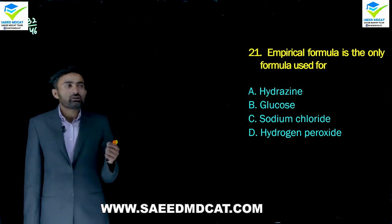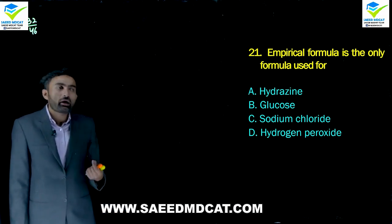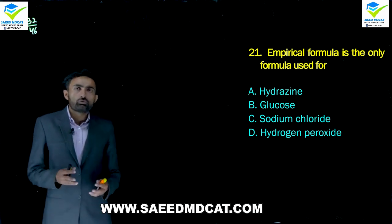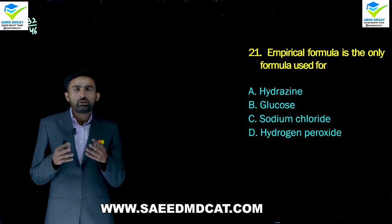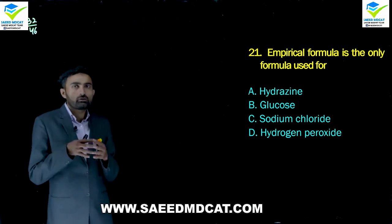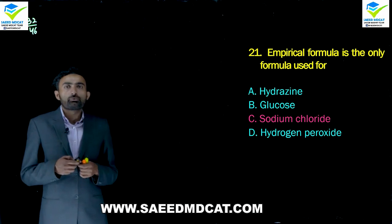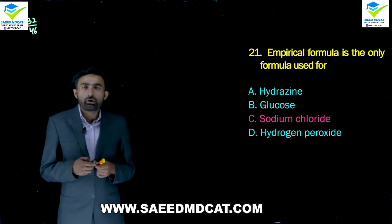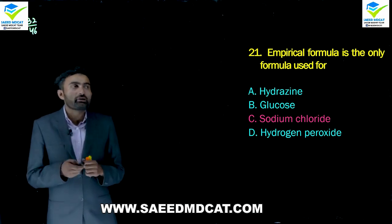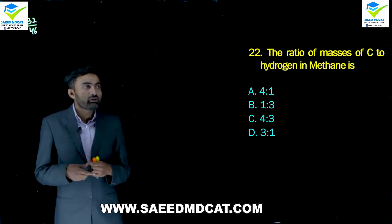Question 21: Empirical formula is the only formula used for which compound? Hydrazine, glucose, and hydrogen peroxide are covalent — both empirical and molecular formulas can be written. But sodium chloride is a purely ionic compound, and ionic compounds are expressed only by their empirical formula. Charlie option (NaCl) is correct.